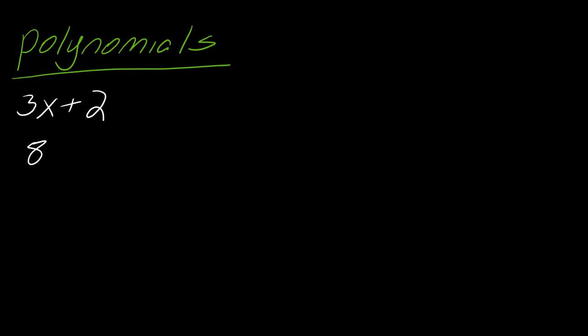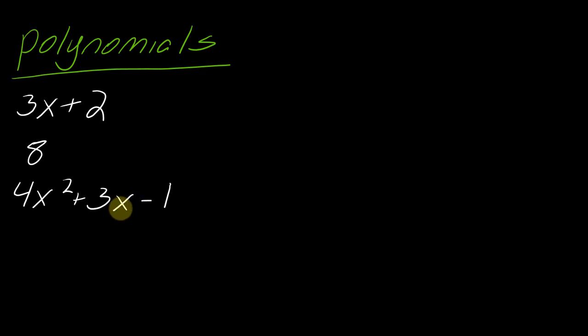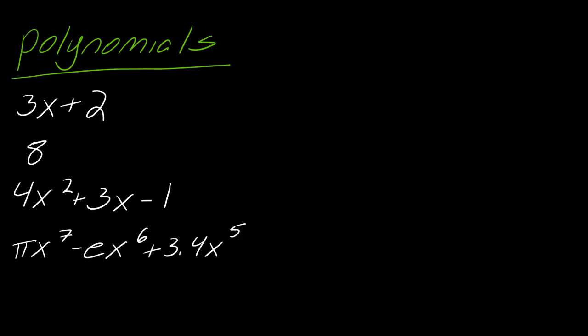Also things like 4x squared plus 3x minus 1. It's all about what these exponents are. x has an invisible exponent of 1, so this one's good to go. So let me show you some weirder ones now — something like pi x to the seventh minus e x to the sixth plus 3.4 x to the fifth.